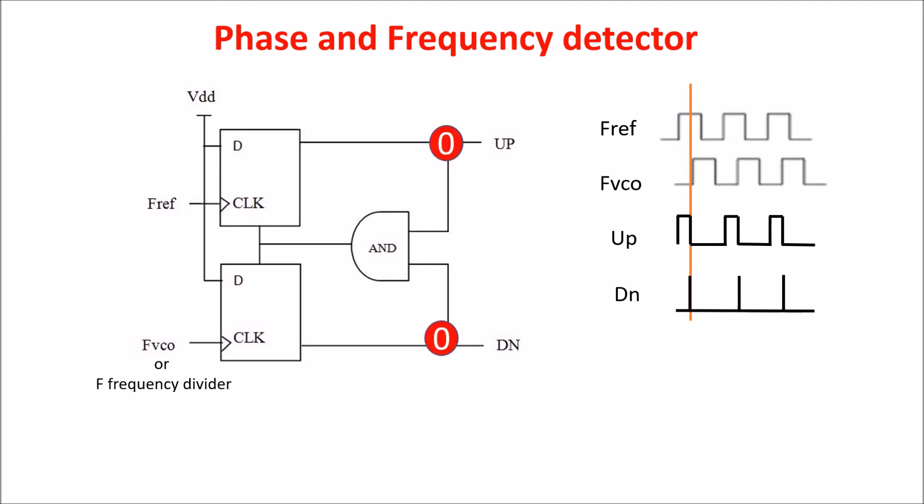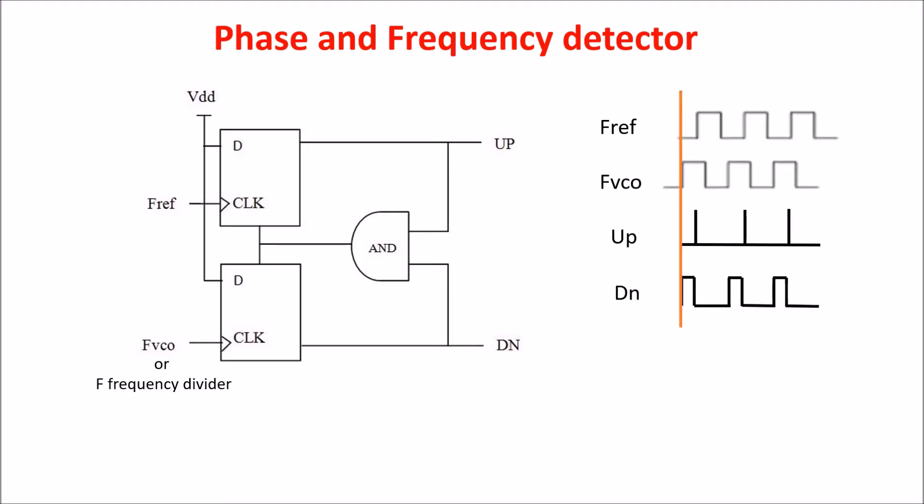The down signal tries to go high on the rising edge of FVCO, but it is immediately put back down by the clear signal, so we have just a spike. If FVCO leads and FRF lags, we have the high signal on the down output and the spike on the up signal. In this way, we recognize which signal leads and which lags.